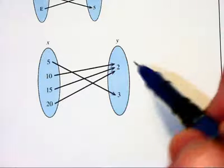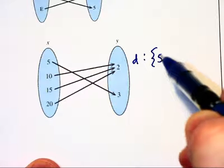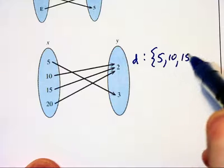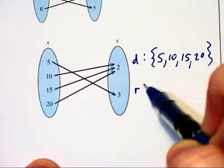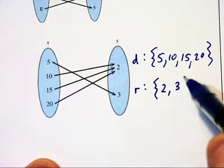In this next situation here, this next mapping, the domain would be 5, 10, 15, and 20. And the range would only contain the values 2 and 3.